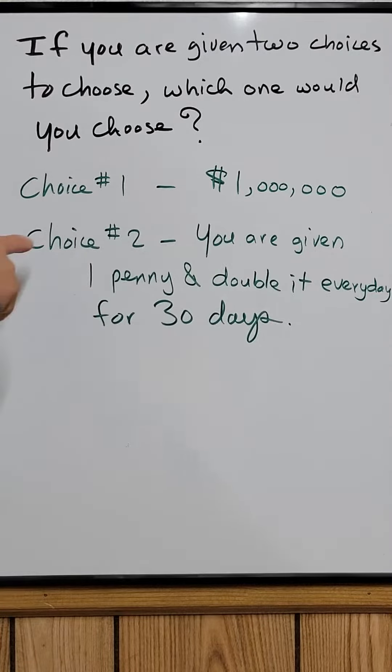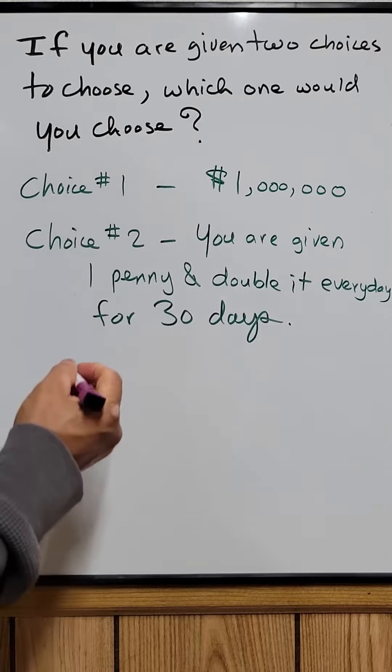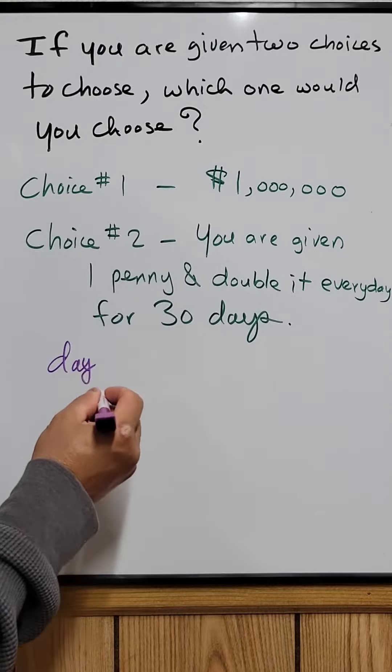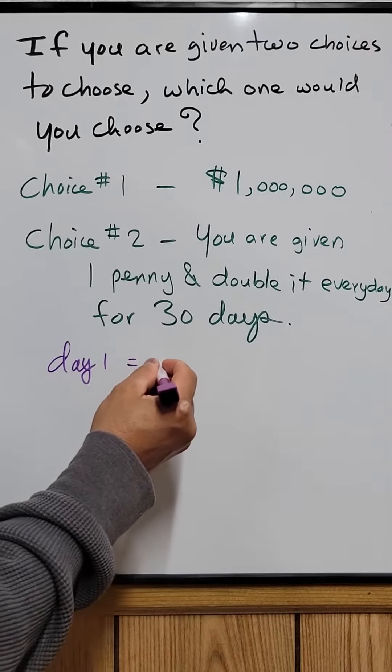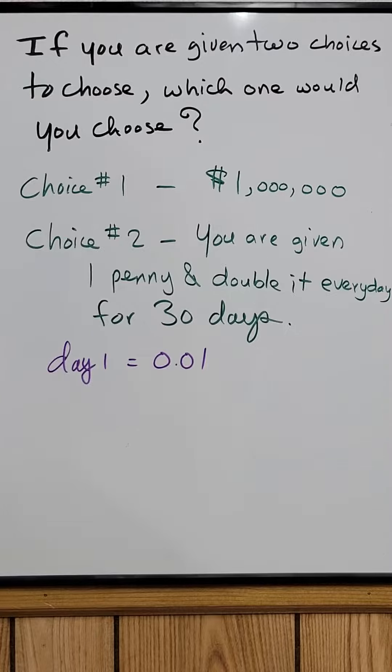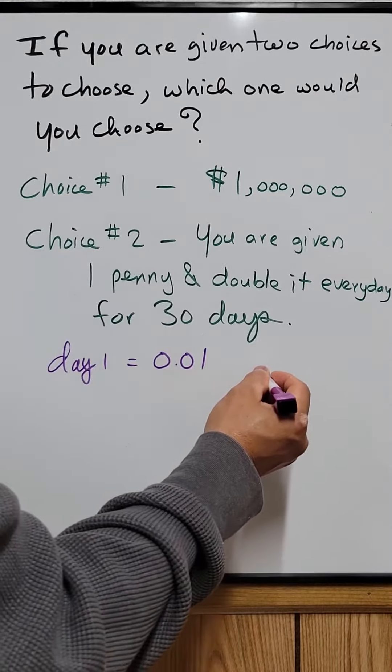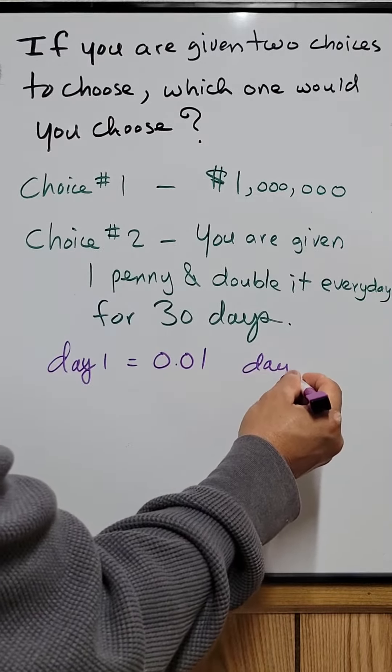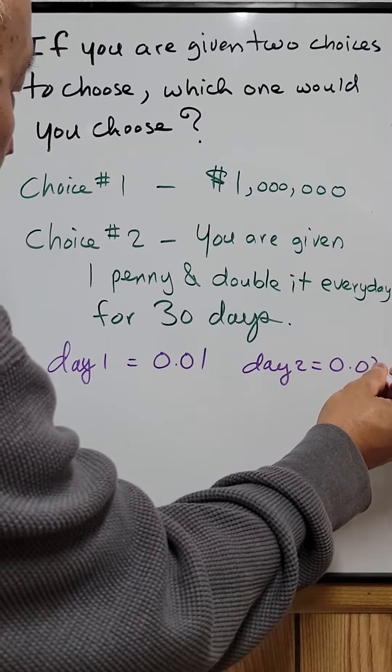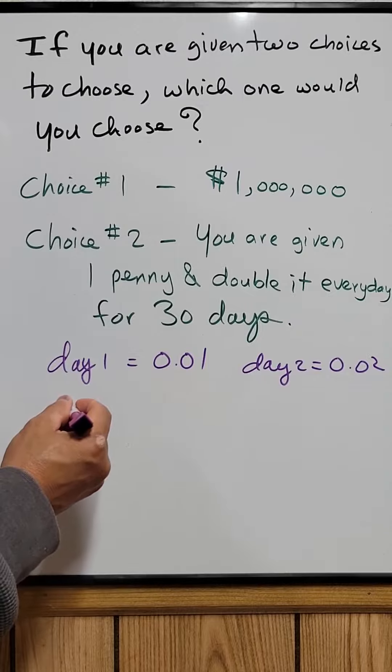Let's say day one: you have one penny. Day two: you double it, will be two pennies. So day three...